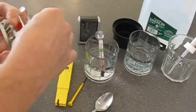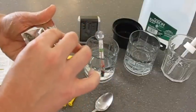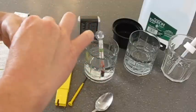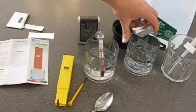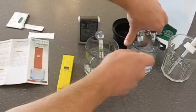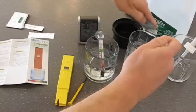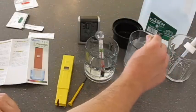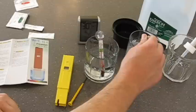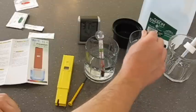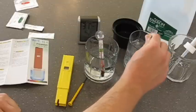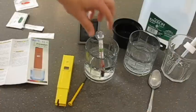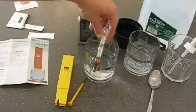So now I'm mixing the potassium hydrogen phthalate with my distilled water. Stir that up until it's completely mixed.